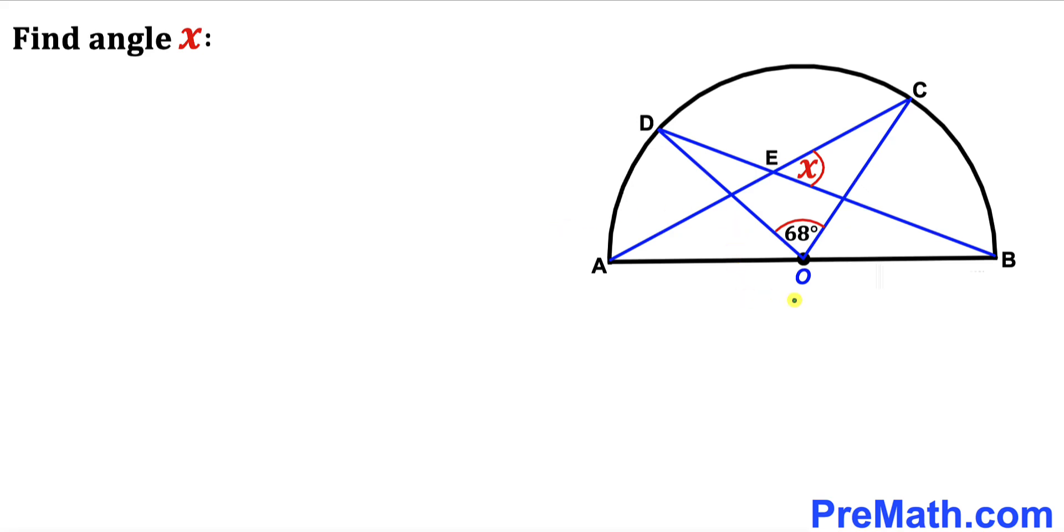Welcome to PreMath. In this video we have got this semi-circle. As you can see in this diagram, angle COD is 68 degrees, and now we are going to calculate this angle X.